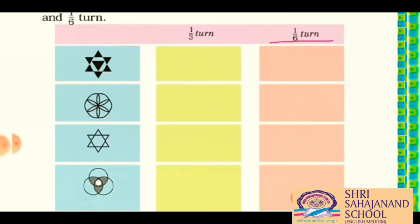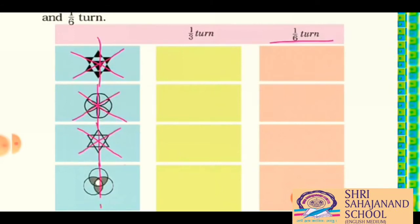Now come to the one-sixth turn. The first thing you have to understand is that you have to find the one-sixth turn of the pictures, and for that you have to find minimum three symmetry lines of these pictures. I am trying to divide all shapes with minimum three symmetry lines. If your observation is perfect, you don't need to draw the symmetry lines. Now you will observe how each picture looks in each one-sixth turn.